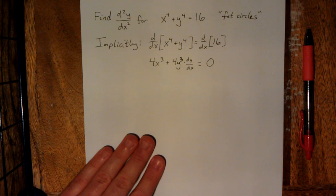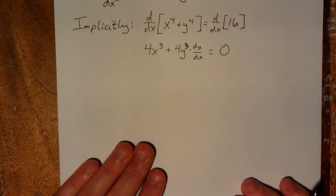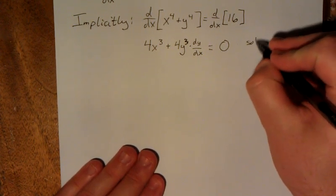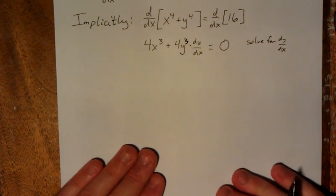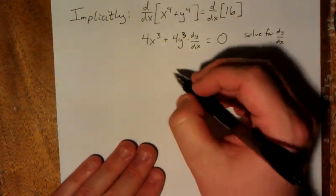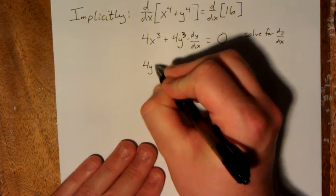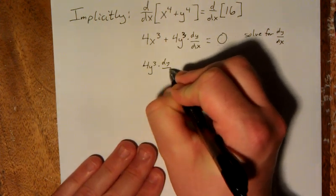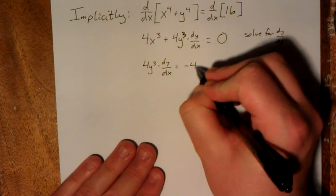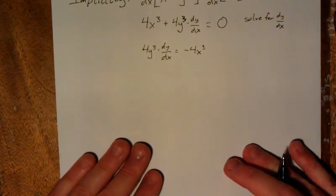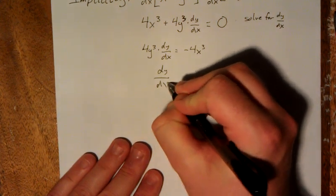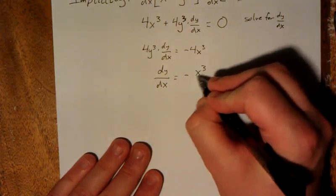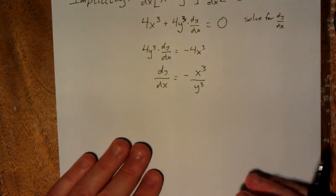So from here, I'm going to zoom in a little bit, make sure that we can see this okay. There we go, that's much better. All right, so from here, I'm going to solve for dy/dx. So a little bit of algebra, I'm going to subtract the 4x cubed from both sides, get 4y cubed times dy/dx is equal to negative 4x cubed, and then we'll divide by 4y cubed on both sides, we get dy/dx is equal to negative x to the third over y to the third, the 4s will cancel each other out.